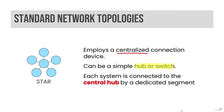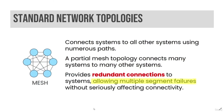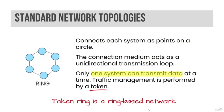A star network topology employs a centralized connection device, such as a hub or switch, where each system is connected to the central hub by a dedicated segment. A mesh network topology connects systems to all other systems using numerous paths, providing redundant connections and allowing multiple segment failures without seriously affecting connectivity. A partial mesh topology connects many systems to many other systems. A ring network topology connects each system as points on a circle; the connection medium acts as a unidirectional transmission loop, only one system can transmit at a time, and traffic management is performed by a token.